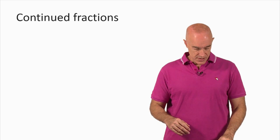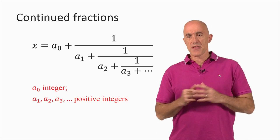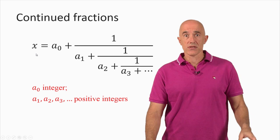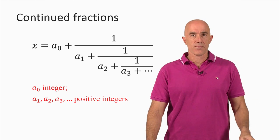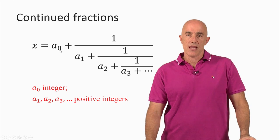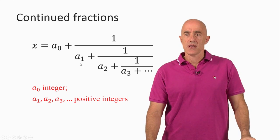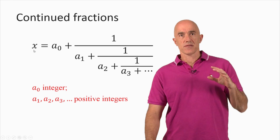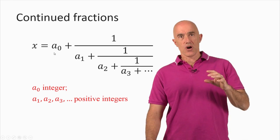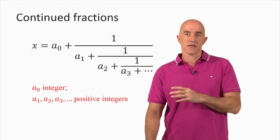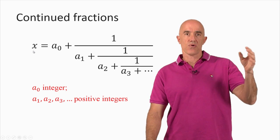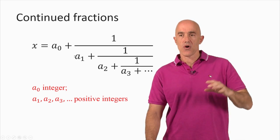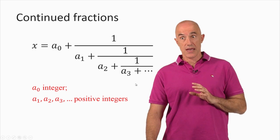So what is a continued fraction? Here's the mathematical representation of a continued fraction. x is a real number — we'll just consider positive numbers for convenience. a₀ is an integer; a₁, a₂, a₃ are positive integers. If x is a positive number, a₀ is the integer part of x. So if x is something like 2.35, then a₀ will be 2. And then we go on and figure out a₁, a₂, and a₃. So x then is this continued fraction.